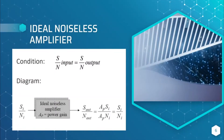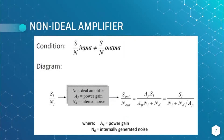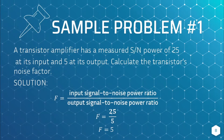In an ideal noiseless amplifier, the signal-to-noise power ratio at the input is equal to the SNR at the output — whatever goes in comes out the same, as shown on the diagram. In a non-ideal amplifier, however, the input signal-to-noise power ratio is not equal to the output signal-to-noise power ratio, because there is internally generated noise added.